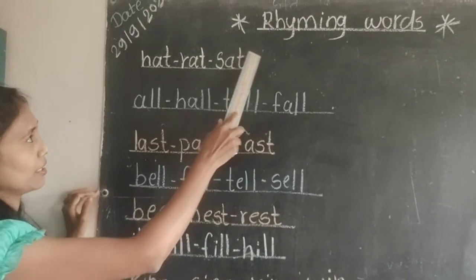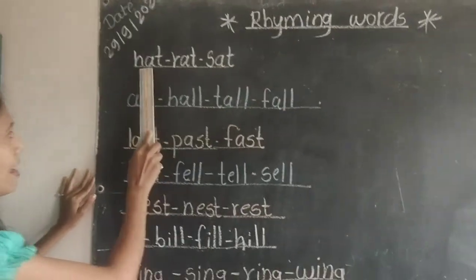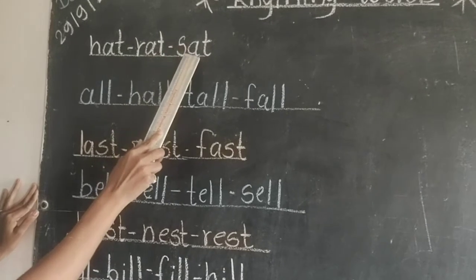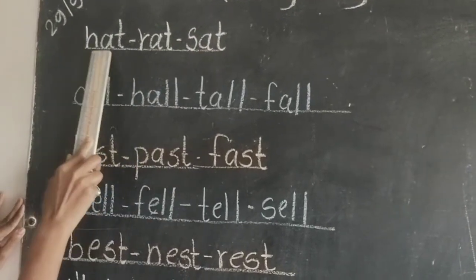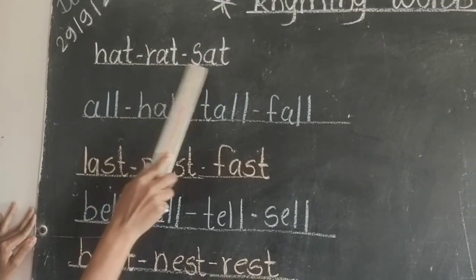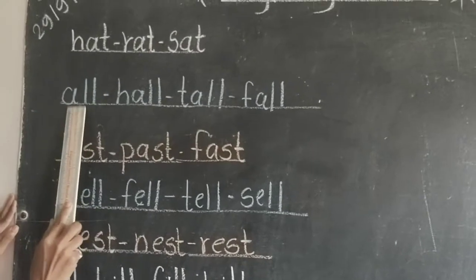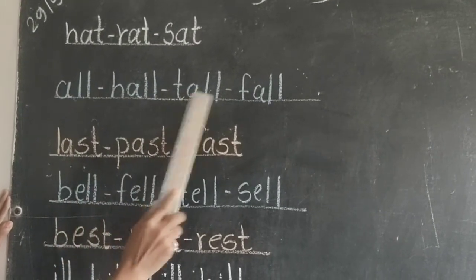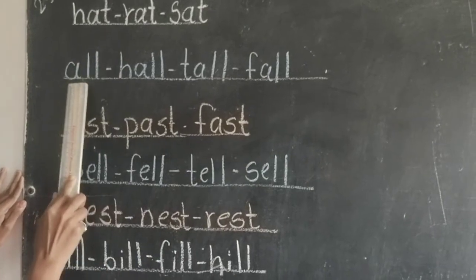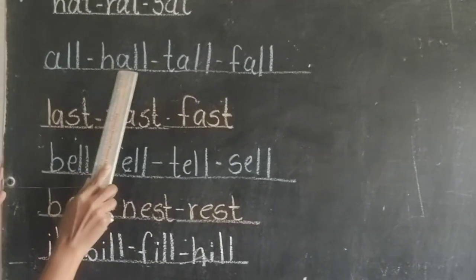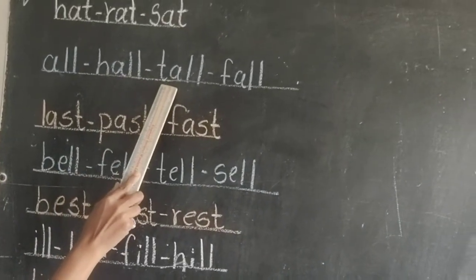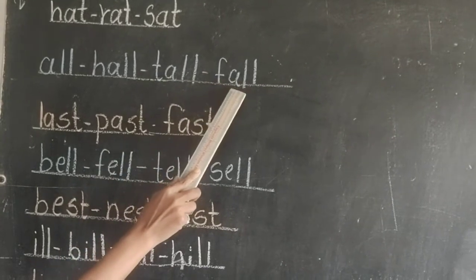Now we are going to see rhyming words. Hat, rat, sat. H-A-T hat, R-A-T rat, S-A-T sat. All, hall, tall, fall. A-double-L all, H-A-double-L hall, T-A-double-L tall, F-A-double-L fall.